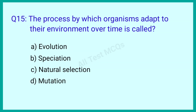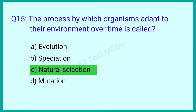Question number 15: The process by which organisms adapt to their environment over time is called? The correct answer is option C: Natural selection.